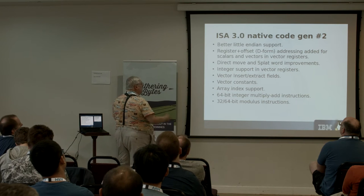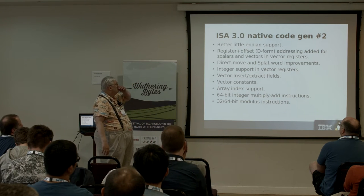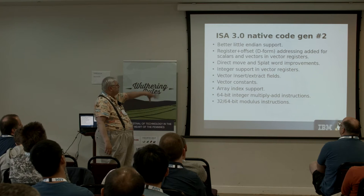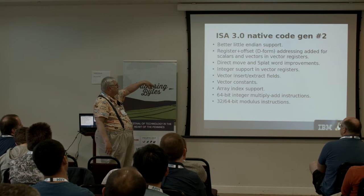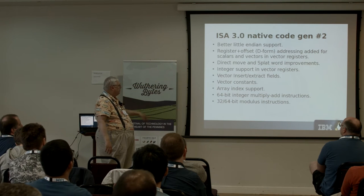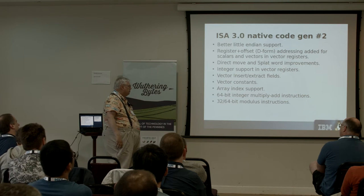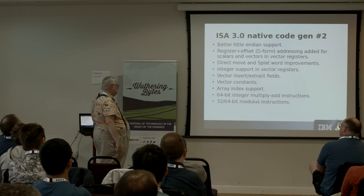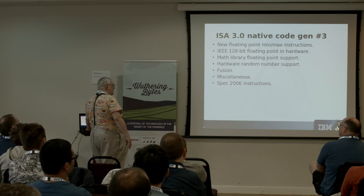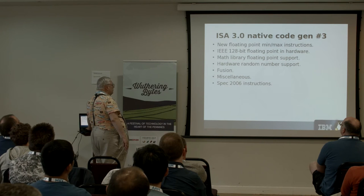What's in ISA 3.0? The major areas — just the chapter headings — include little endian addressing, what we call D-form addressing, direct move, integer support, vector insert and extract, vector constants, array index, 64-bit integer multiply and add, modulus, floating point, and fusion.